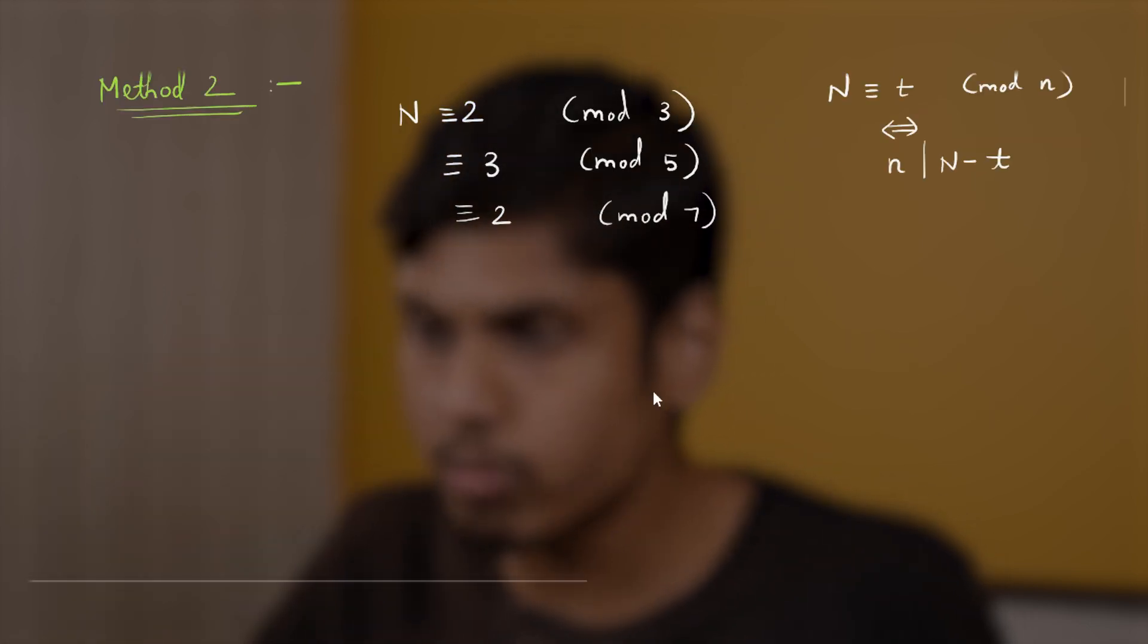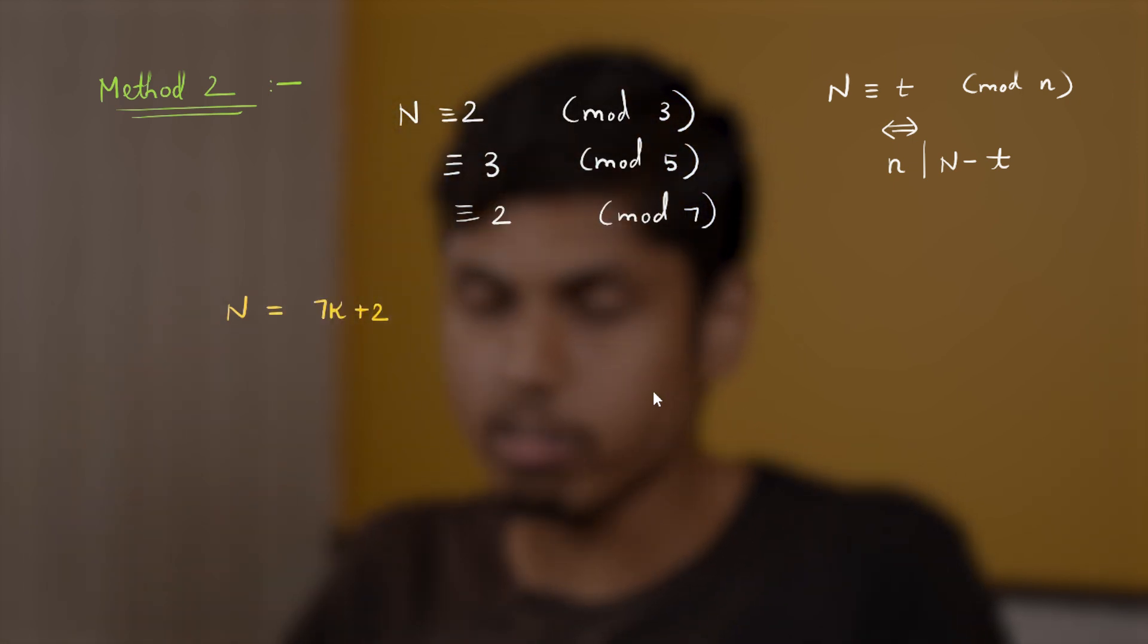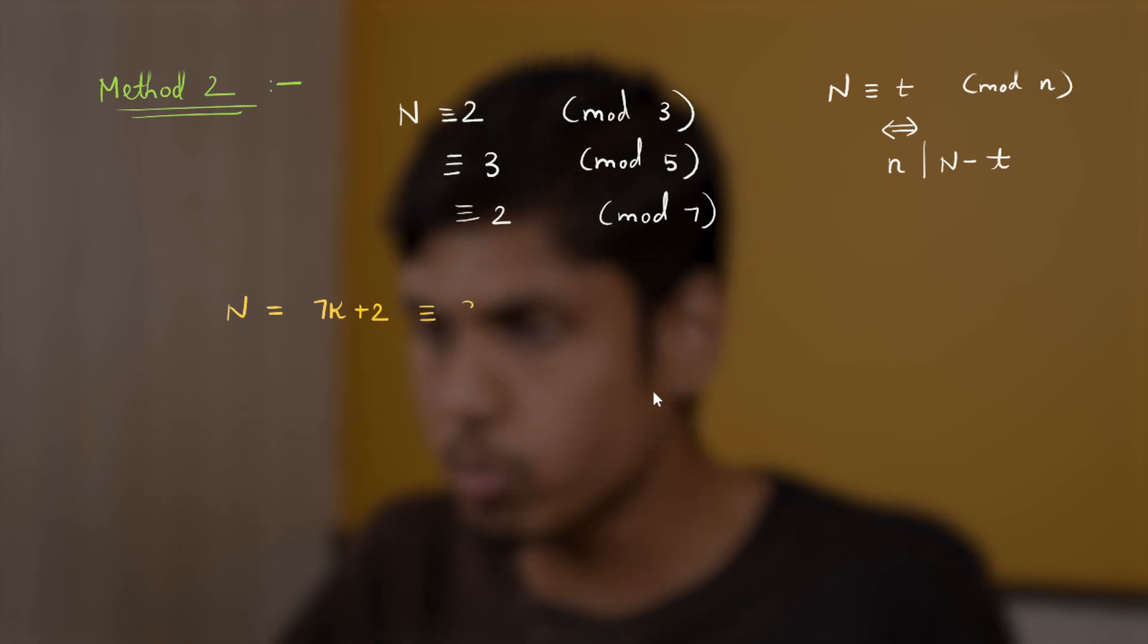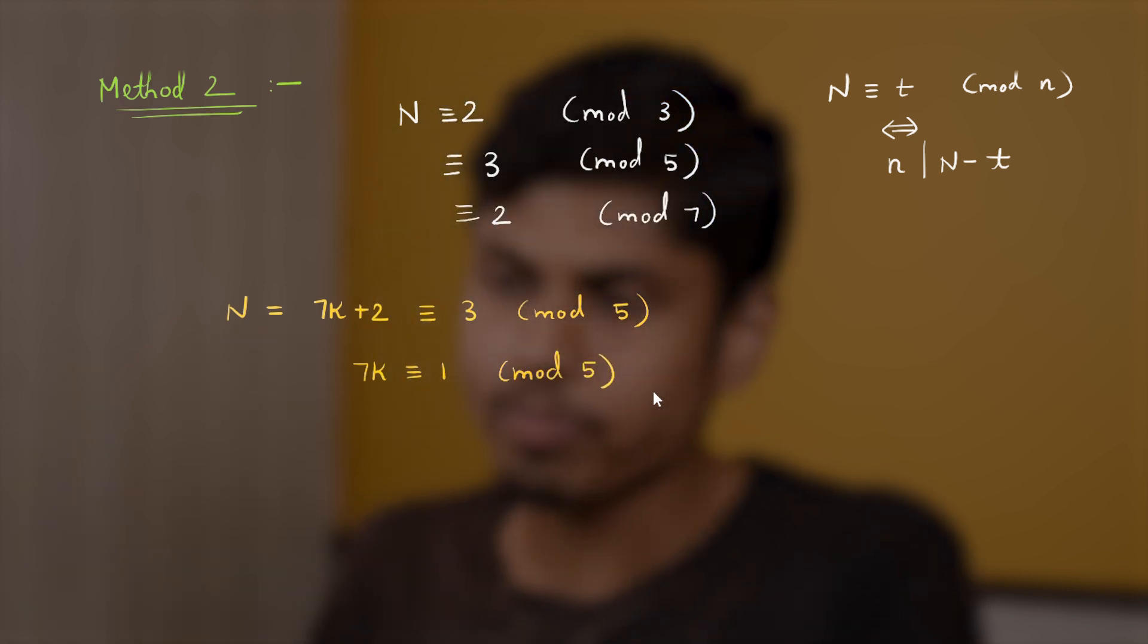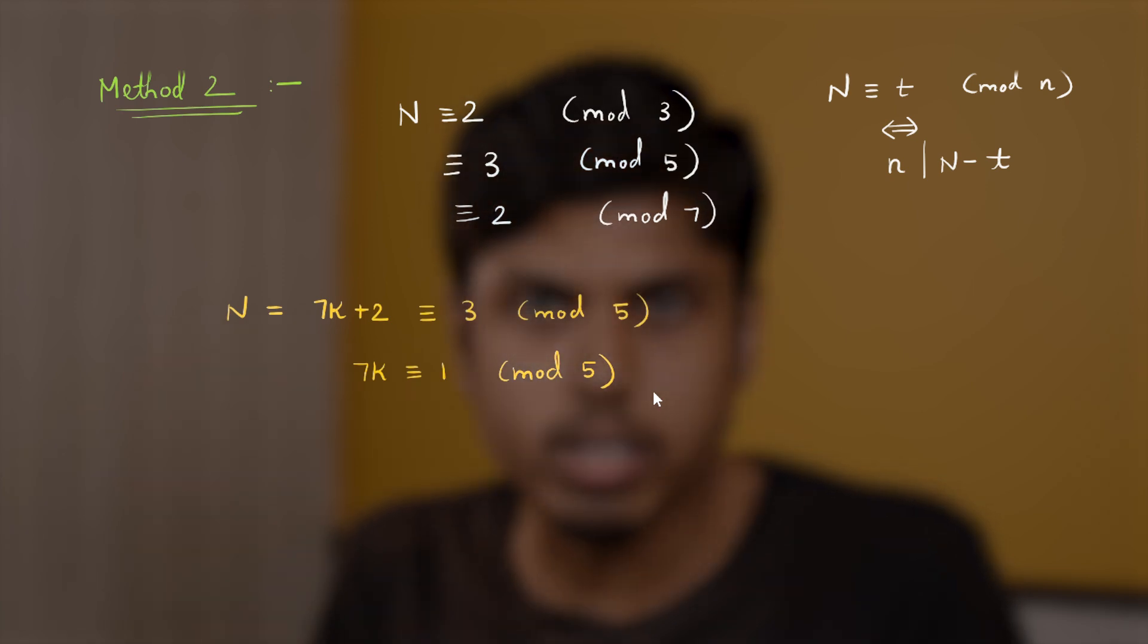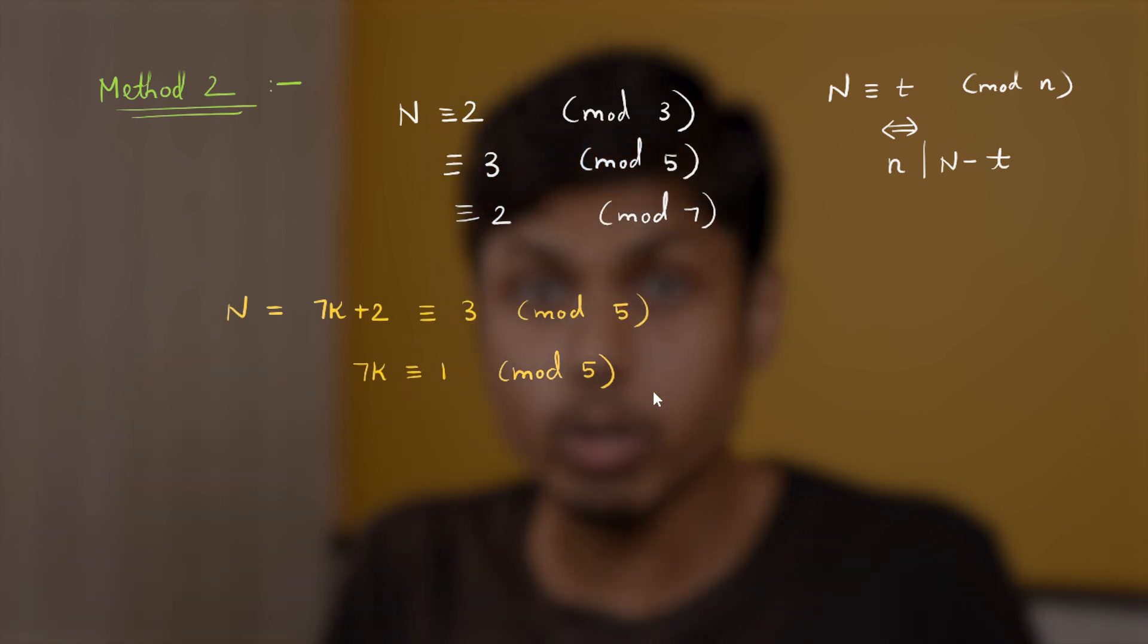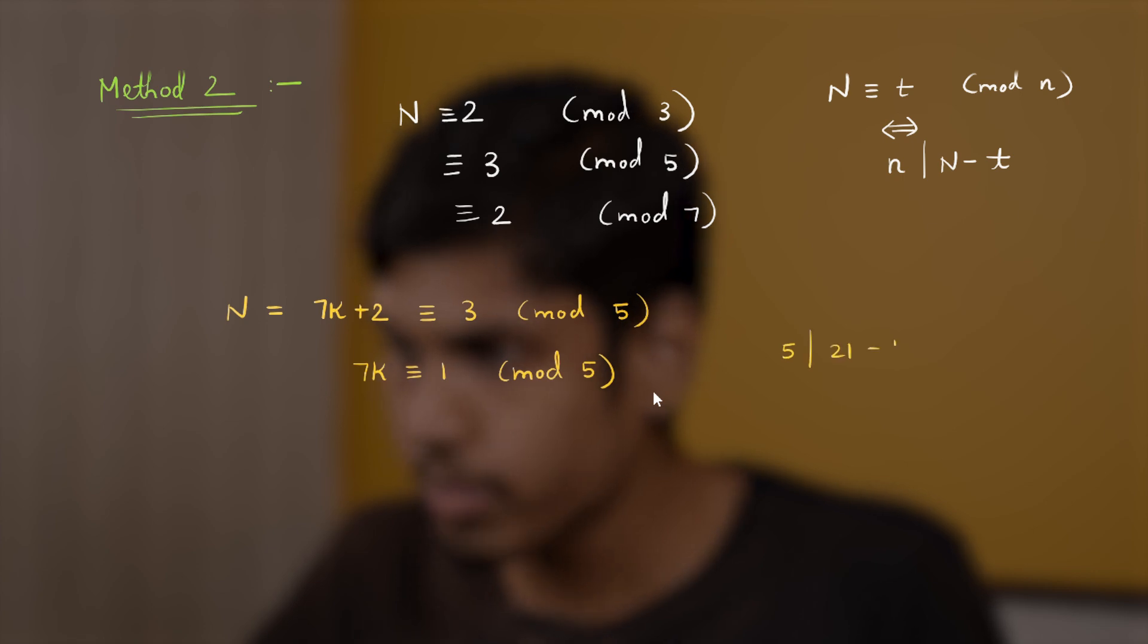Now we know that n is of the form 7k plus 2. So let's equate this to the modulo 5 equation, that is congruent to 3 mod 5. So moving the 2 to the other side, one would get 7k congruent to 1 mod 5. But here you go. Modulo 5, 1 can be replaced with 21, because 5 divides 21 minus 1. Isn't it? So 5 divides 21 minus 1.